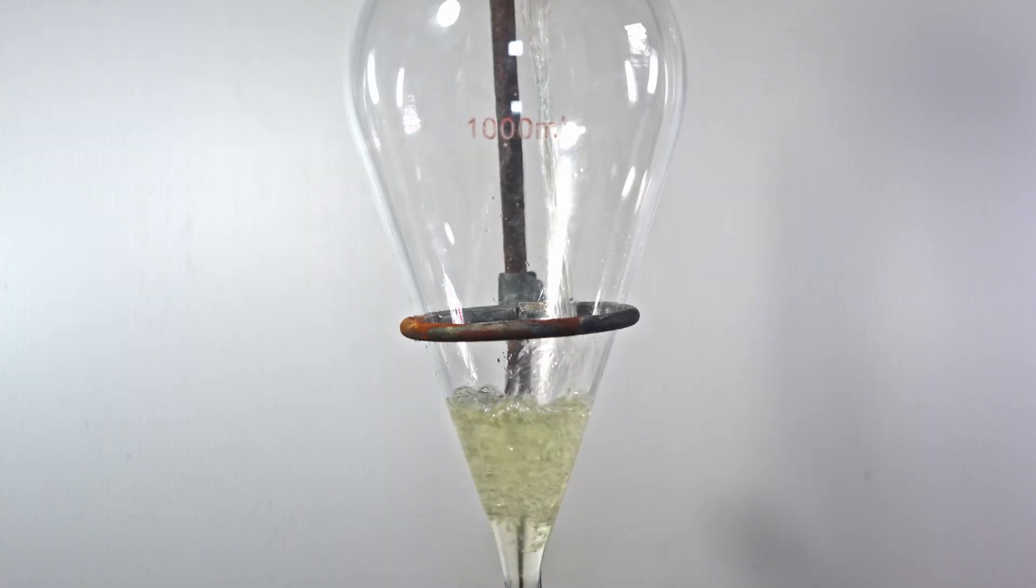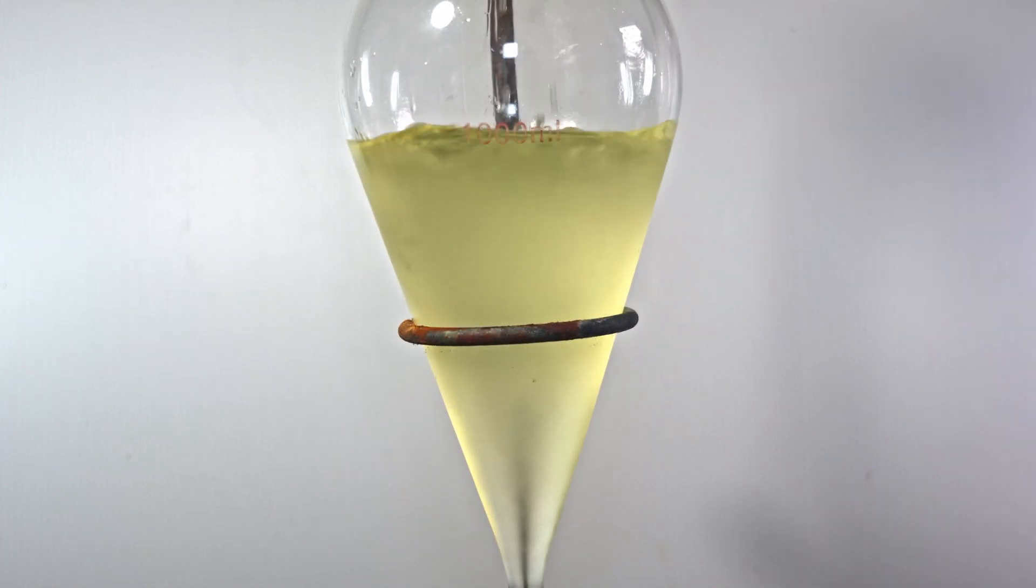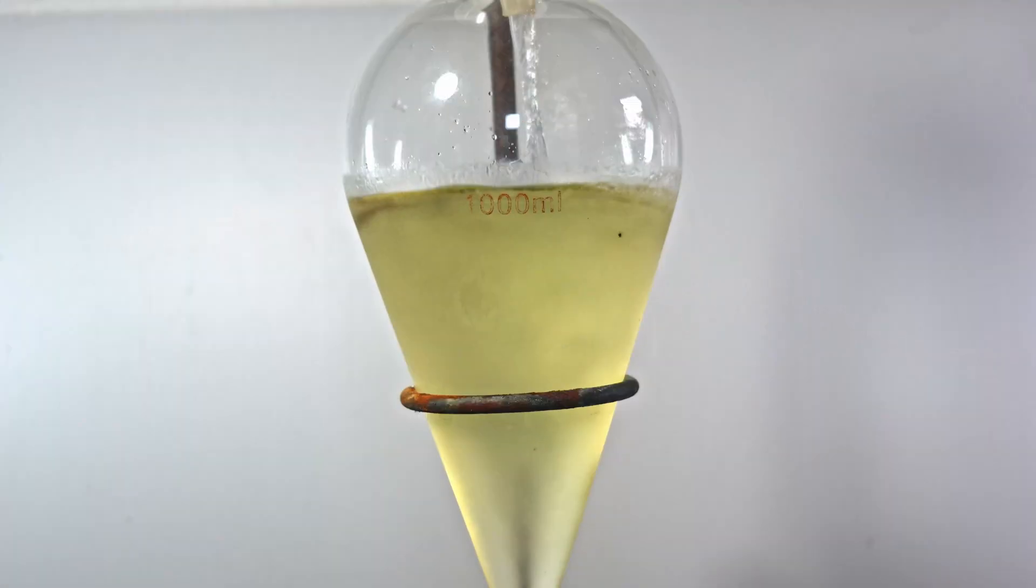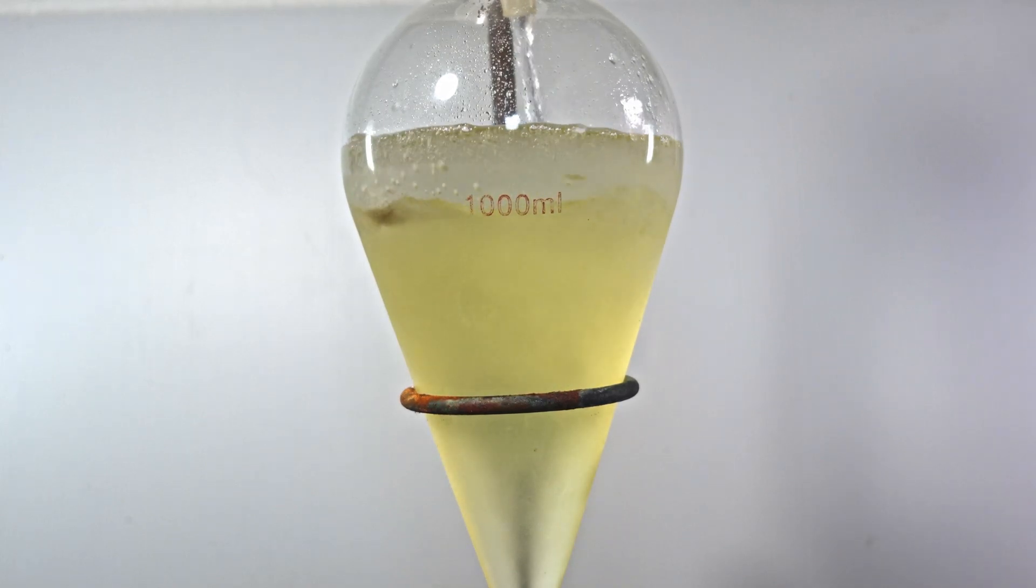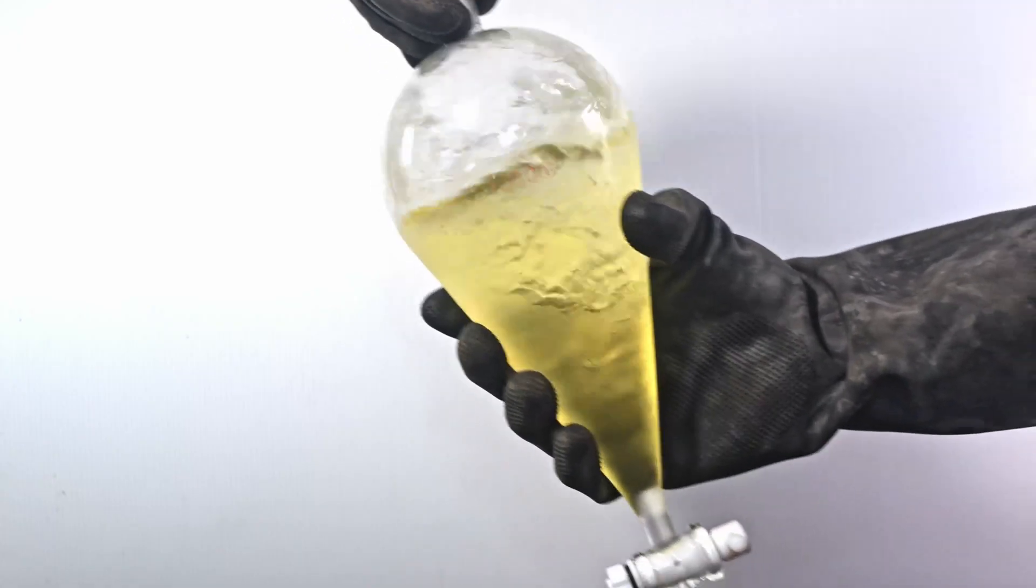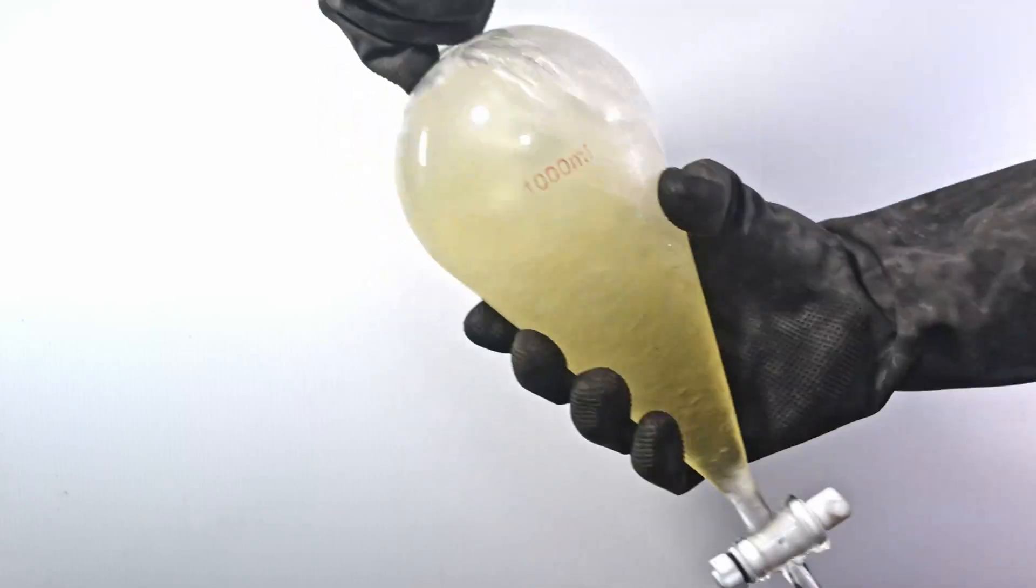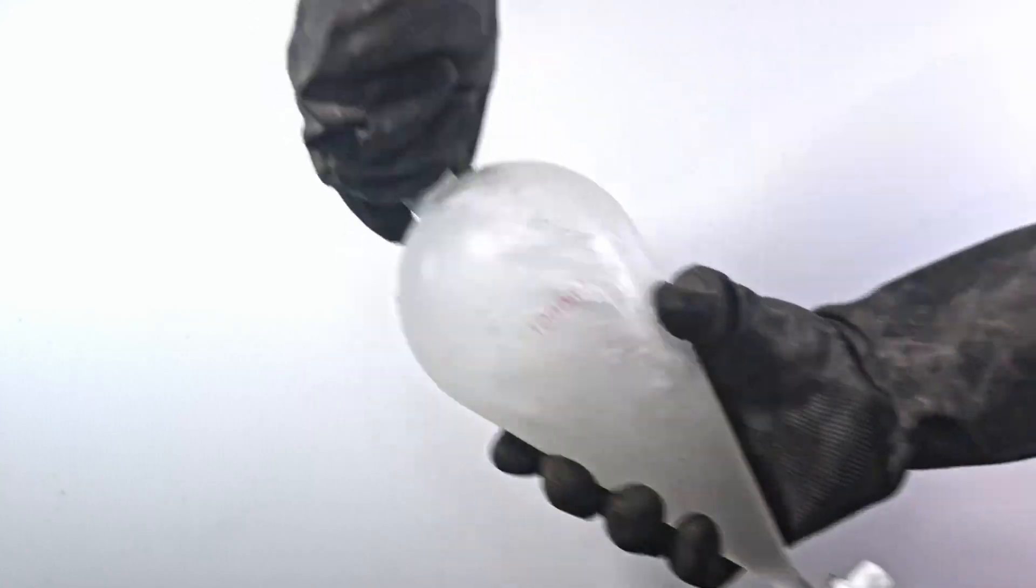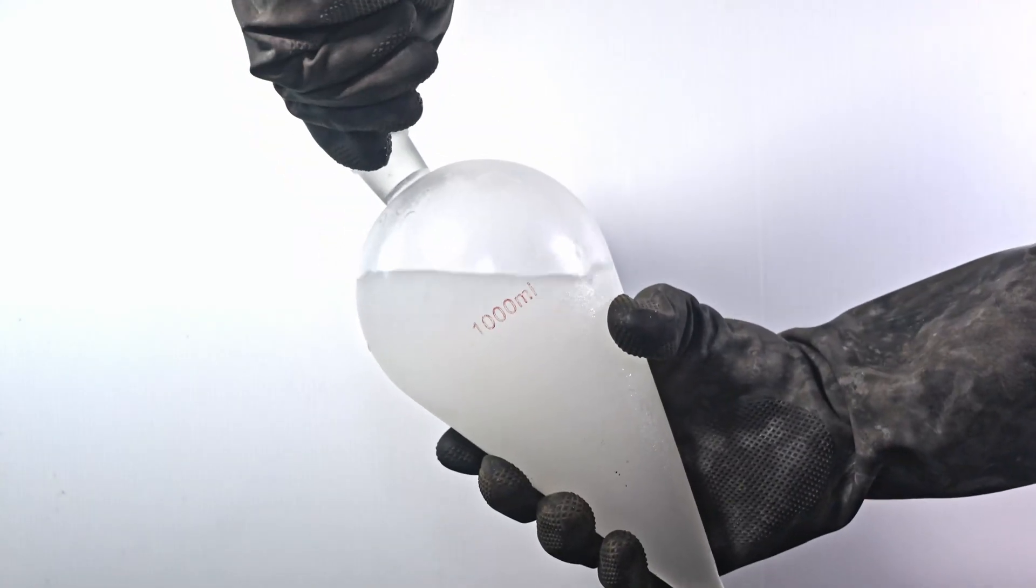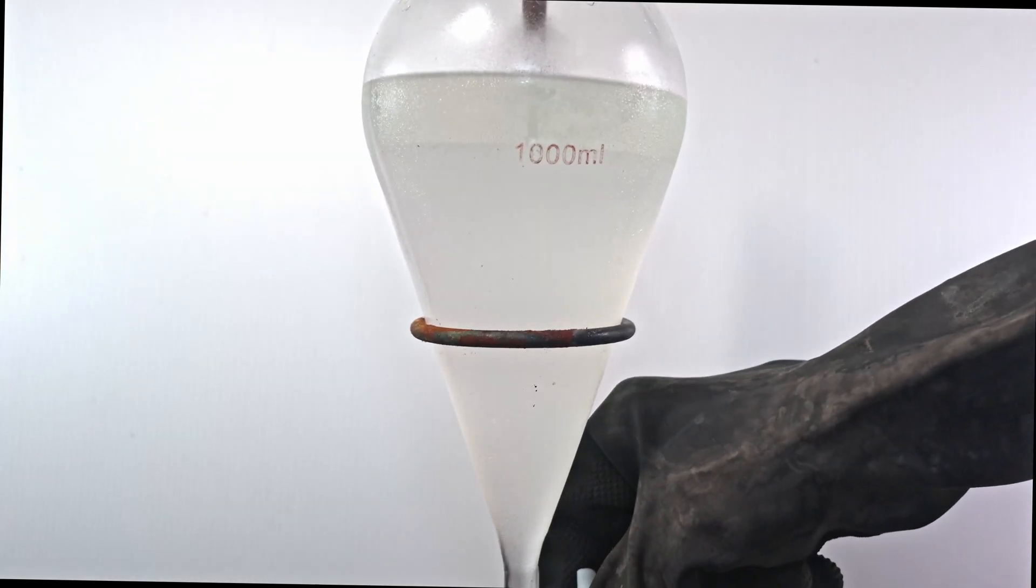To purify my isopropyl bromide, I first poured it into an addition funnel. While the oil doesn't come through, some of the colorants did. Next, I add 200 milliliters of saturated sodium bicarbonate solution. I give it a good shake to neutralize any of the remaining hydrogen bromide and suck out a lot of the water. One cool thing this also does is decolorize my crude isopropyl bromide. After the two layers separate, I drain off the organic layer on the bottom.